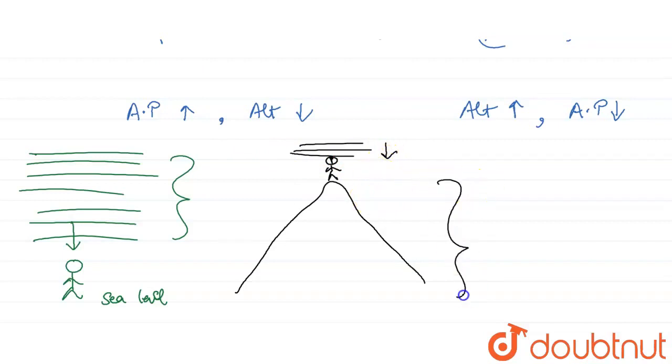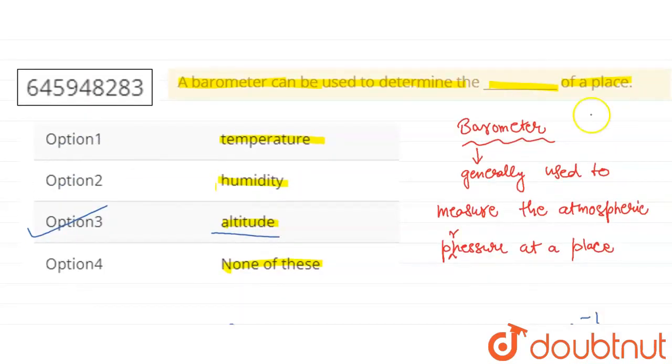So basically, if I measure atmospheric pressure with a barometer, then using the right units, I can find the altitude. Right?